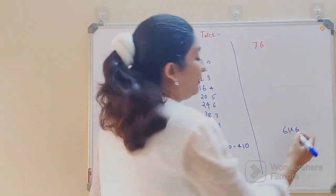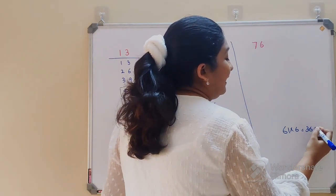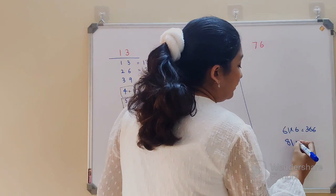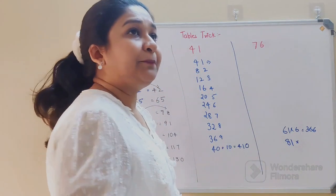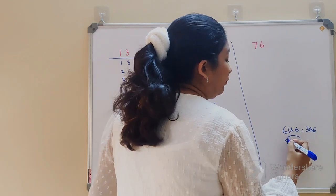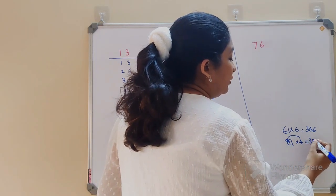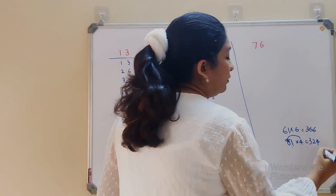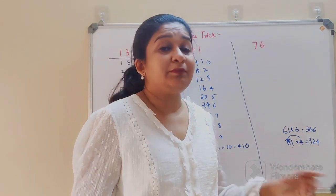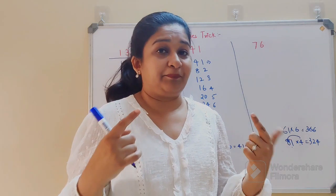And then just multiply 1 and 6, gets you 6. So basically your answer is 36 and 6. Similarly for 81 into 4, 8 into 4 gets you 32, and 4 into 1 gets you 4.